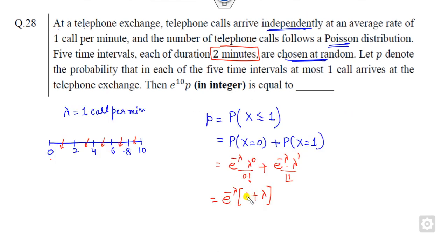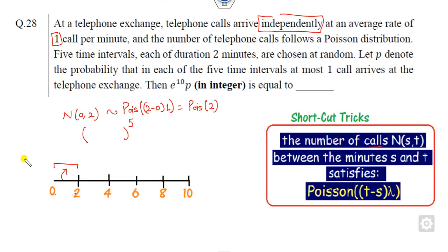So as we can see, we have derived this value. I can substitute here my two. So this is my three e raised to power minus two. So this is the answer corresponding to this interval.